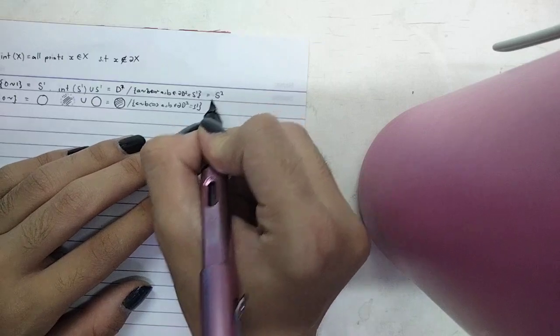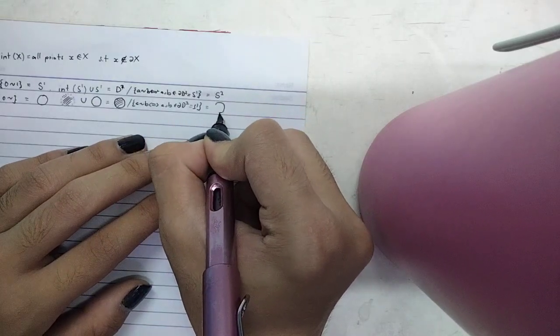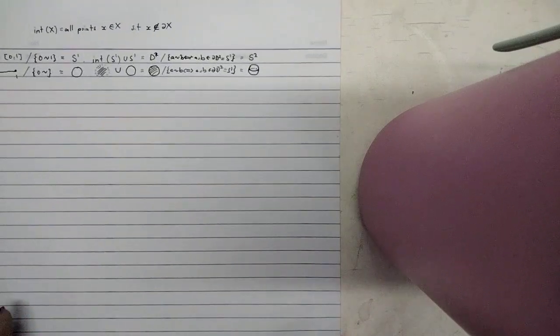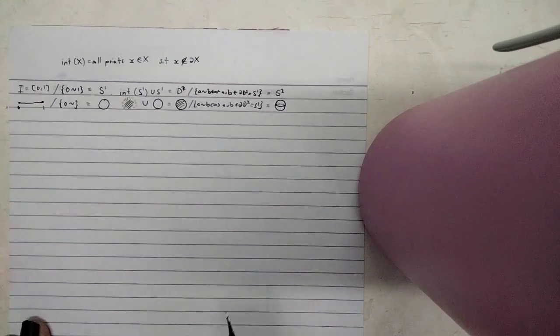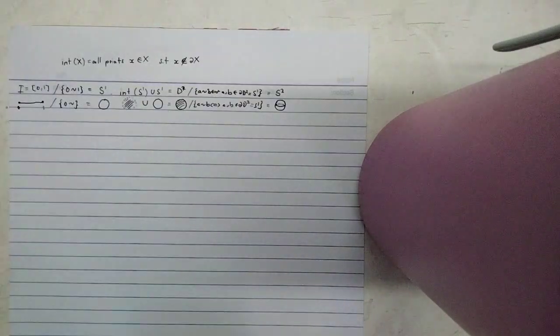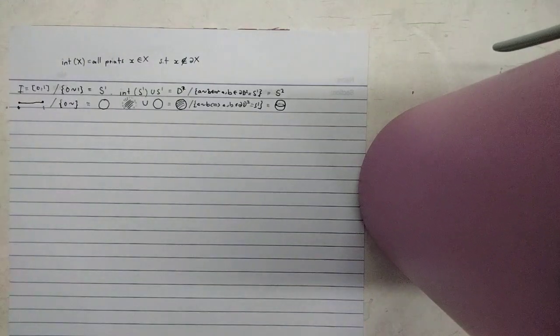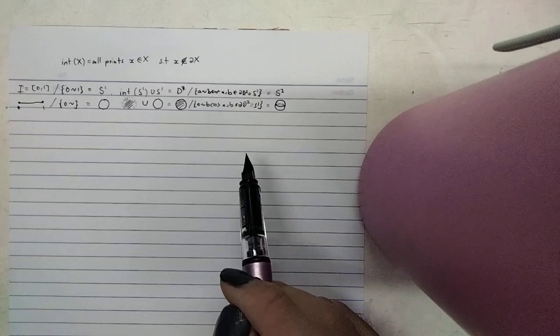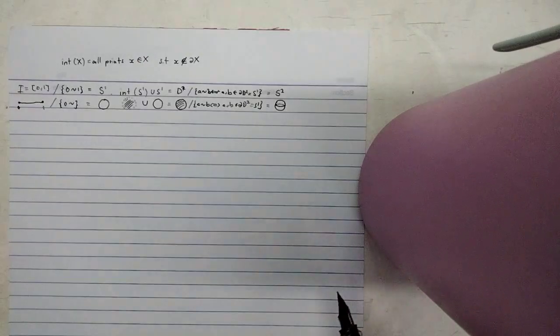We're identifying all points along the circle enclosing the disc, and that gives us S². I'm not going to define the quotient topologies further — this is all based on the Euclidean topology and we build from there. That definition is pretty straightforward and I suggest you do it on your own.